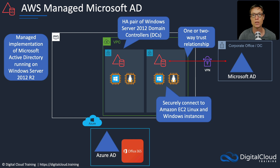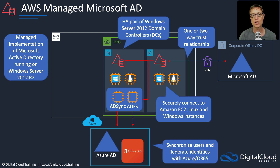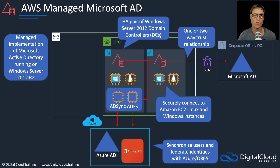You can also connect to Azure Active Directory and to Office 365. You need a couple of services to do this called ADSync and ADFS. These connect to the directory so that you can synchronize users and federate identities with Azure and Office 365. ADSync is about synchronization, and ADFS is a federation service — it provides identity provider functionality between your AWS managed Microsoft AD and Azure AD or Office 365.